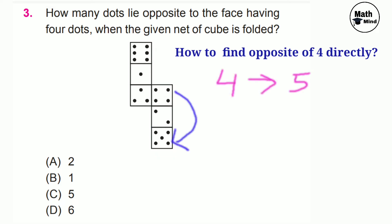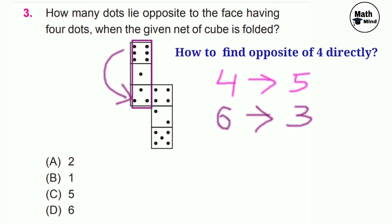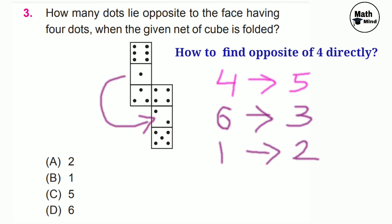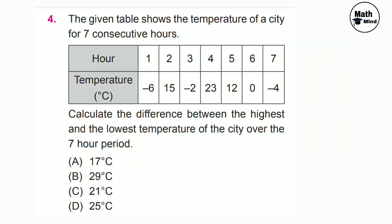Since 6, 1, 3, and 2 are adjacent to 4, the remaining face is 5, so 5 is opposite to 4. We can also say these 3 faces lie in a line, so they are opposite pairs: opposite of 4 is 5, opposite of 6 is 3, and opposite of 1 is 2. Option C is correct — 5 dots.